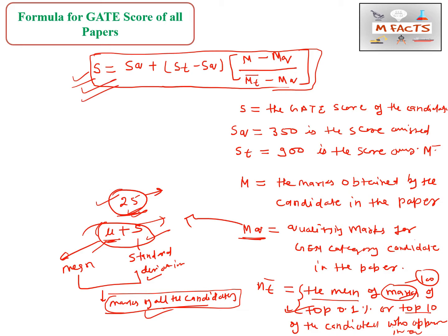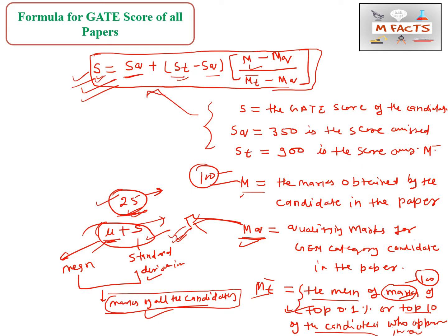So now we know the standard formula for calculation of GATE score. S is the GATE score we want to calculate; Sq is 350 assigned by the GATE authorities; St is 900 assigned for calculating the GATE score; M is the marks obtained by the candidate out of 100; Mq is the qualifying marks for the general category candidate; and M̄t is the mean of marks of the top 0.1 percentile or top 10 candidates, whichever is larger.